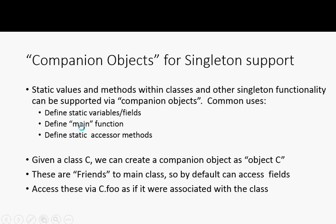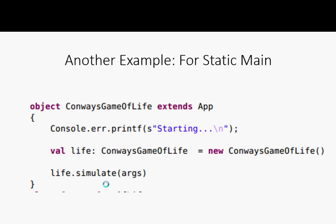One area where this is useful is you can put a main function in the companion object — that's how you write the equivalent of Hello World in Scala. Another way is to derive a companion object from 'App', which I've provided in the template. So you can define static fields, main, etc. in the companion object. These are friends with the main class and can access things within it. You access them like 'C.foo' even though they're the companion, not the class itself.